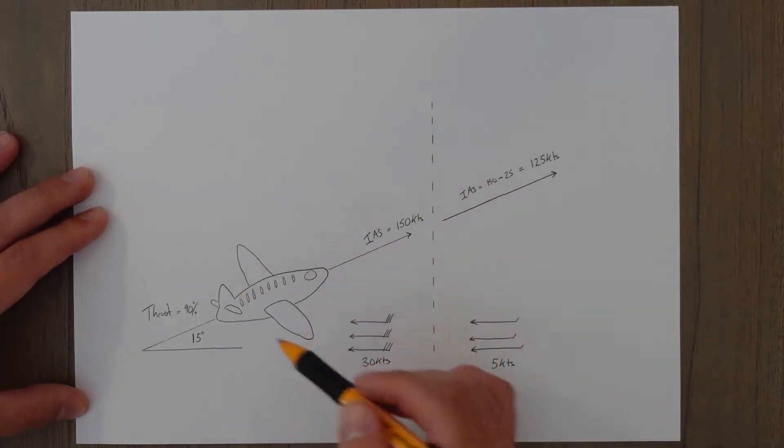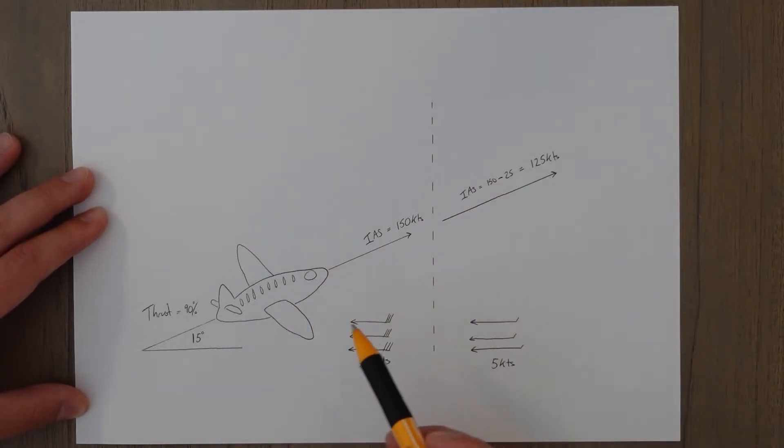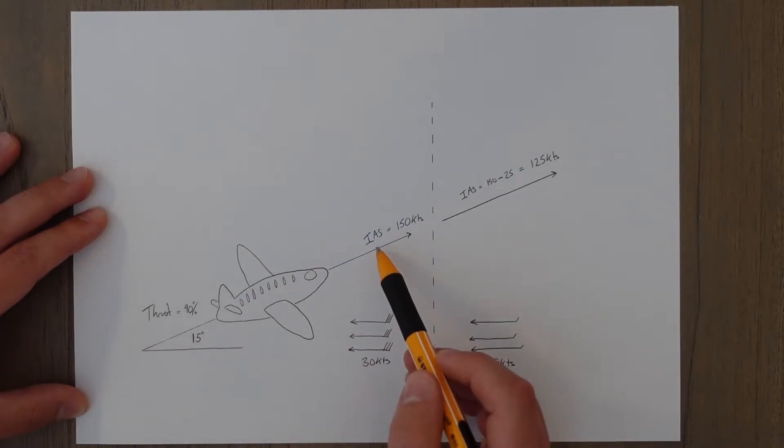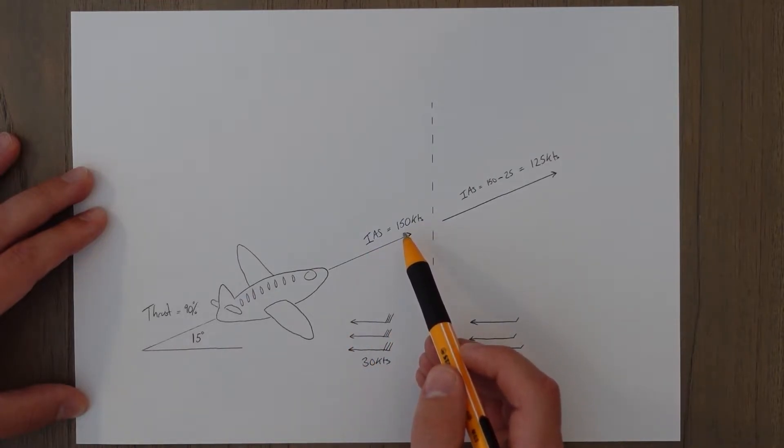So if we take a look at this example here, we have a pitch of 15 degrees and a power of 90 percent based off of the actual conditions of the day, which is a 30-knot headwind, and we want to be traveling with an indicated airspeed of 150 knots.